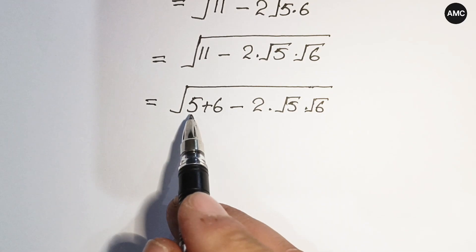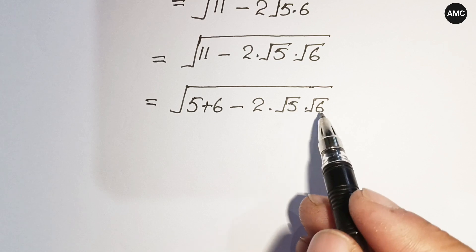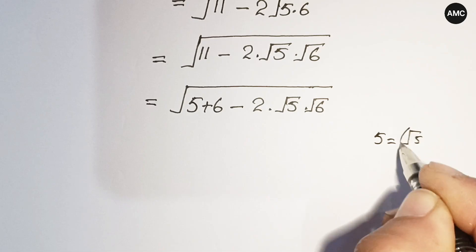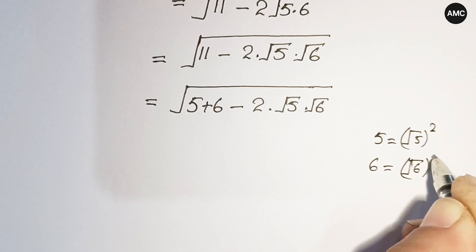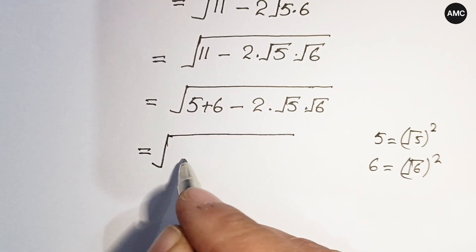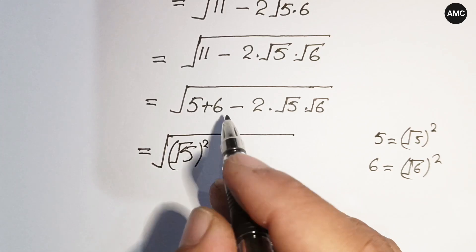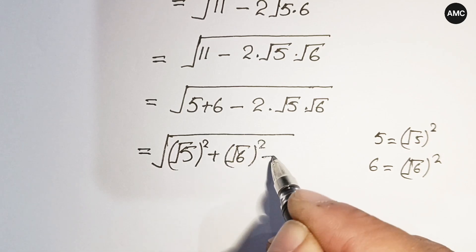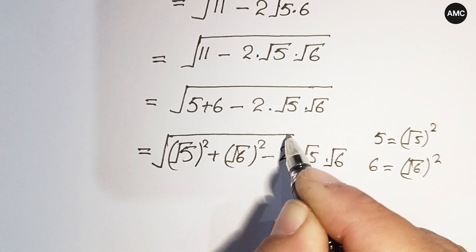For this purpose, we write 5 as a squared and 6 as b squared, with minus 2 times a times b. Specifically, 5 equals (√5)² and 6 equals (√6)². Putting this together, we get the square root of: (√5)² plus (√6)² minus 2 times √5 times √6, all under the outer square root.